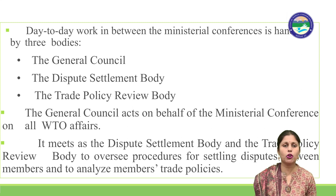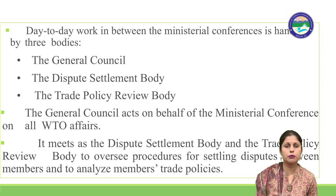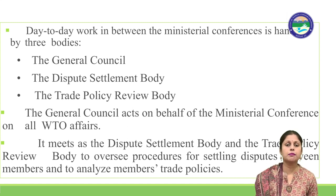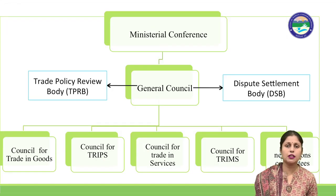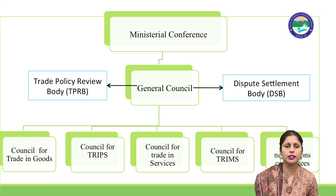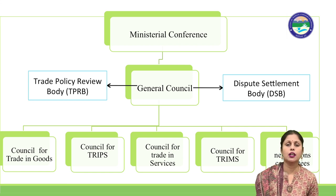The day-to-day work between Ministerial Conferences is handled by three bodies: the General Council, the Dispute Settlement Body, and the Trade Policy Review Body. These three bodies are essentially the same body. Under the General Council, various councils, working groups, and committees operate — such as the Council for Trading Goods, Council for TRIPS (Trade Related Intellectual Property Rights), Council for Trading Services, Council for TRIMS (Trade Related Investment Measures), and Trade Negotiations Committees.